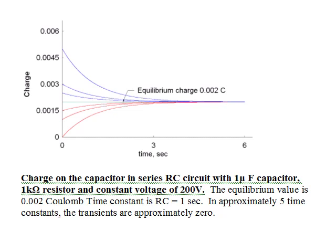Here is a graph of one of these solutions showing these features. The equilibrium value is where the first derivative is zero — any solution starting there stays there. Because these are decaying exponentials, any solution starting above the equilibrium decays toward it, and any solution starting below creeps up toward it. The equilibrium is therefore a stable asymptote — nearby solutions approach the equilibrium over time.